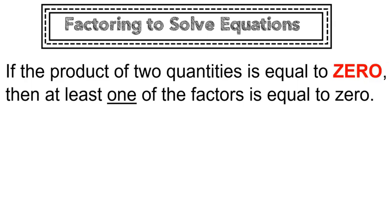Because if the product of two quantities is equal to zero, then we know that at least one of the factors must be equal to zero.